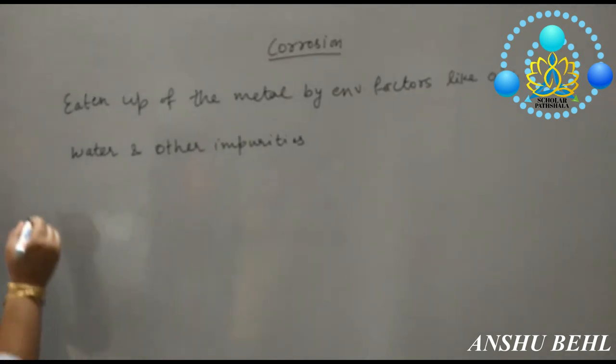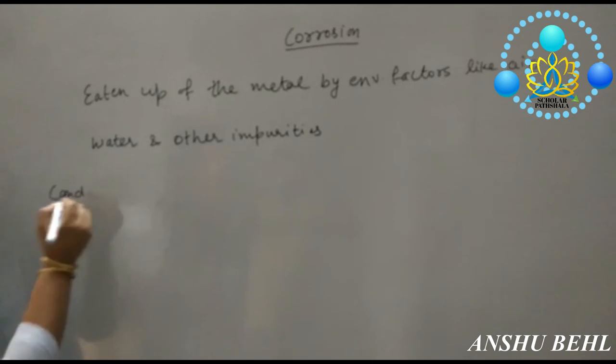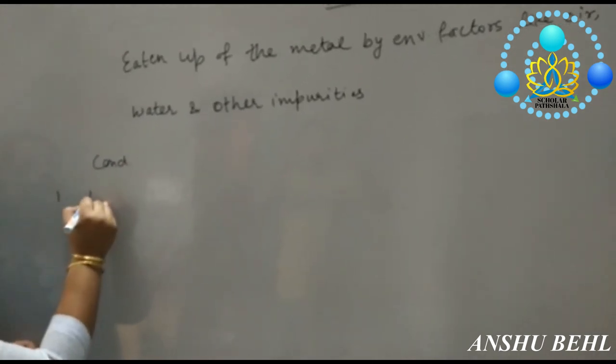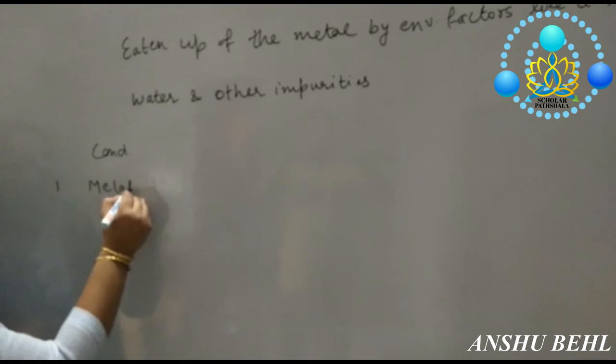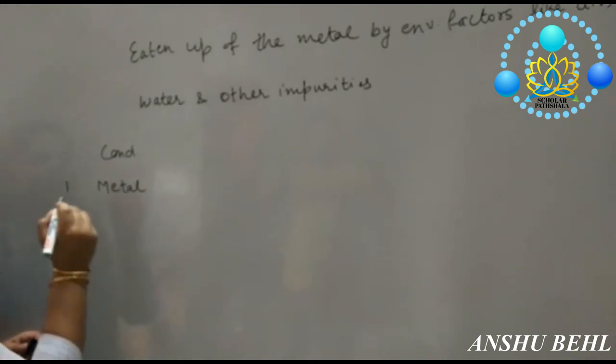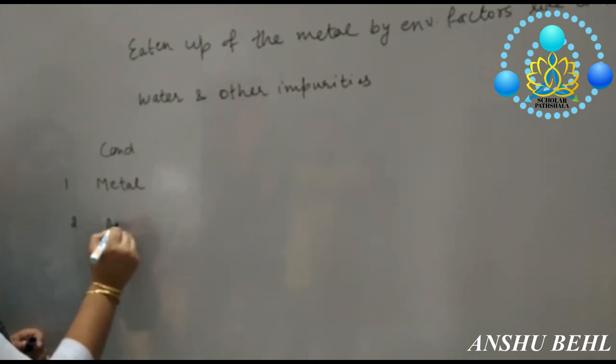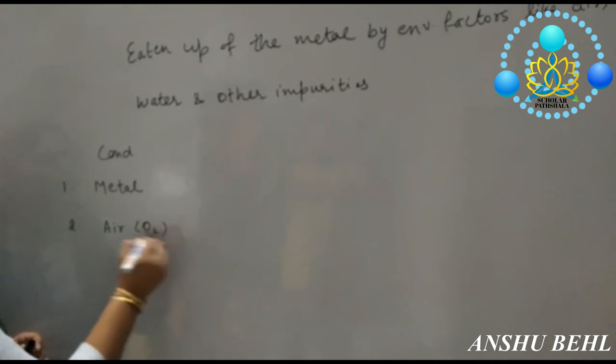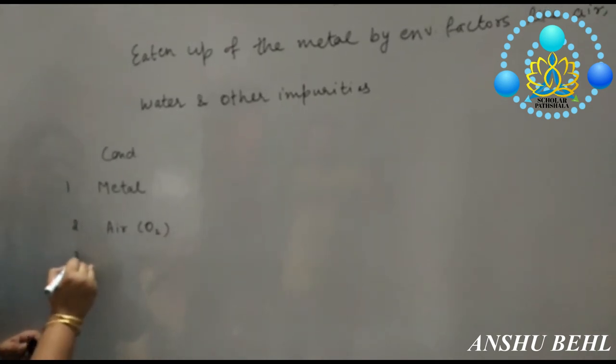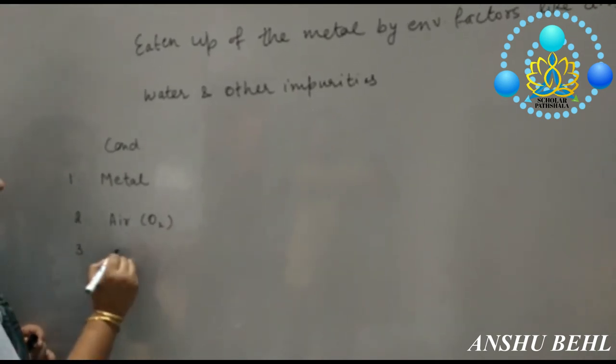So what are the conditions required for rusting or corrosion? First is presence of metal. Second is presence of air, that is oxygen is required for rusting. Third condition is water.